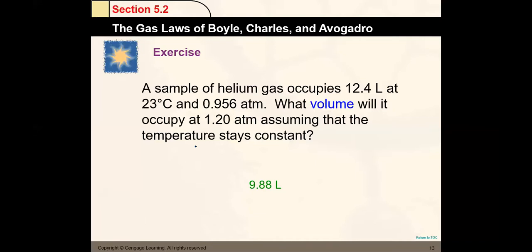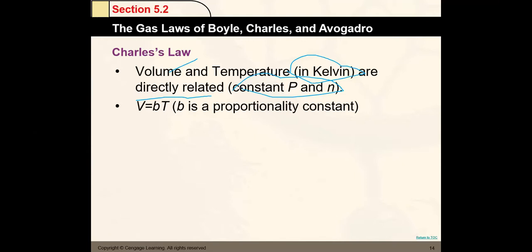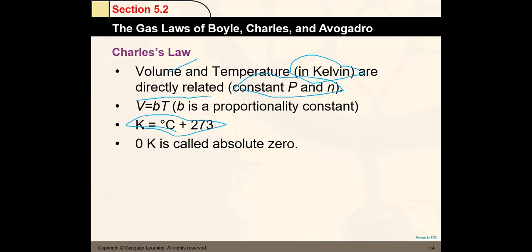Charles' Law: volume and temperature are directly proportional at constant pressure and constant number of moles. More volume = more temperature; less volume = less temperature. Important limitation: you must always use temperature in Kelvin. The conversion is K = °C + 273. Absolute zero (0 Kelvin) is the lowest temperature allowed in nature — nothing can go below 0 K. In Celsius or Fahrenheit you can have negative temperatures; in Kelvin you cannot.